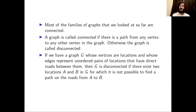For example, consider a graph whose vertices are locations and whose edges represent pairs of locations that have direct roads between them. If this graph is disconnected, that means there exist two locations A and B for which it is not possible to find a path on the roads from A to B.